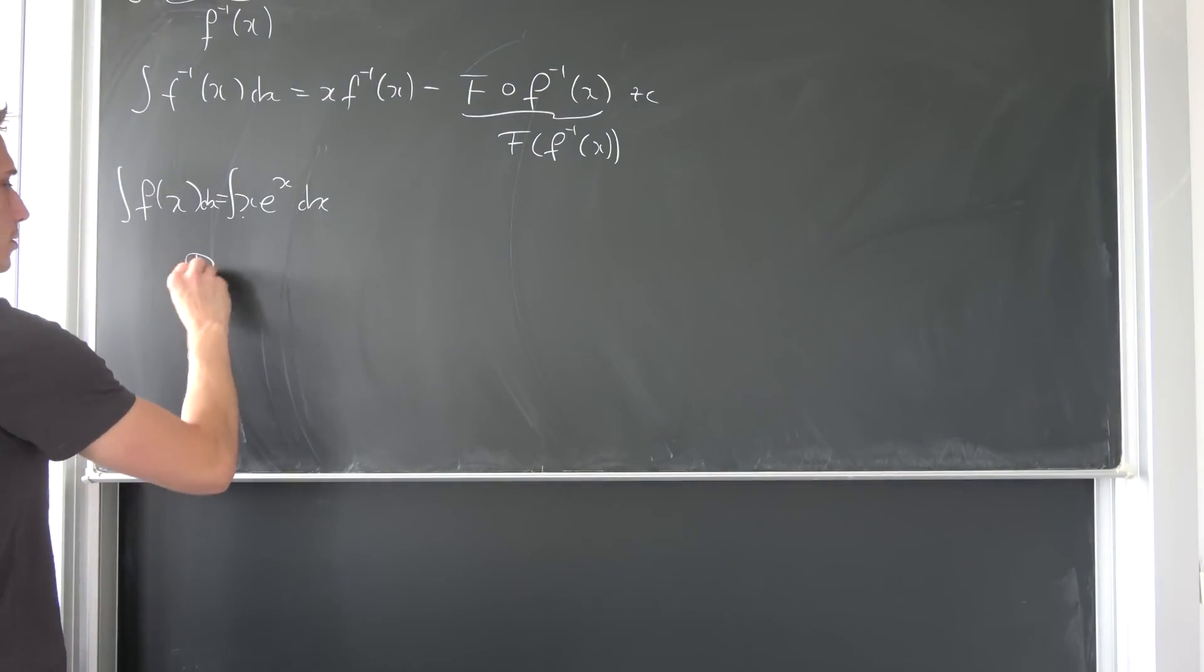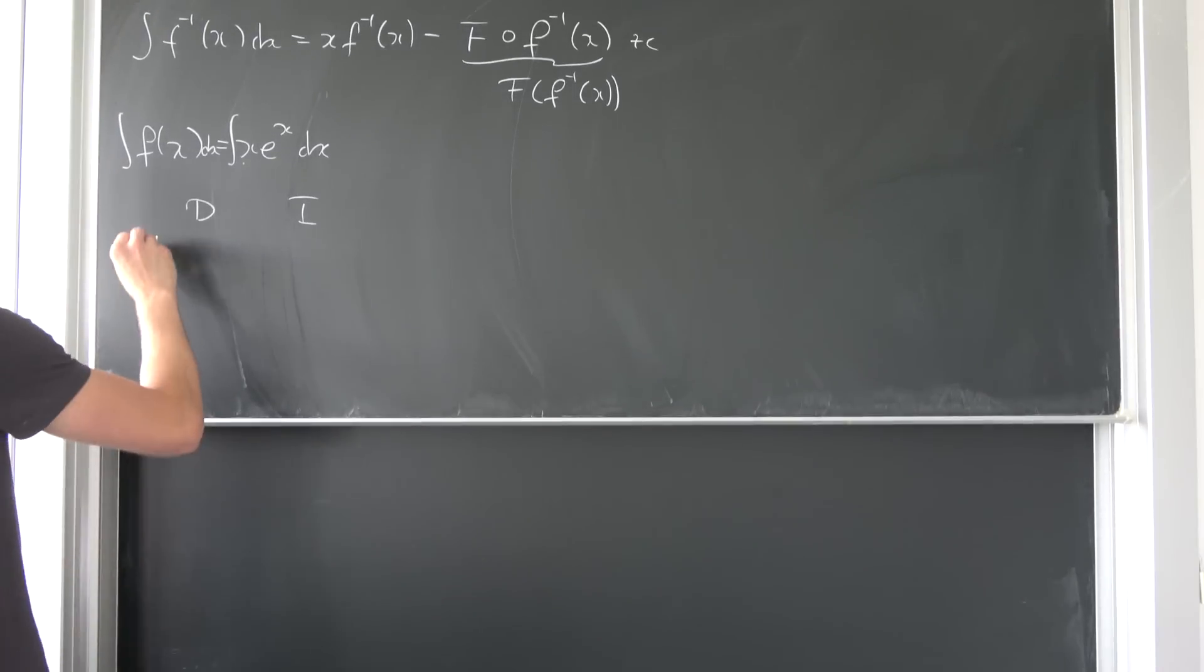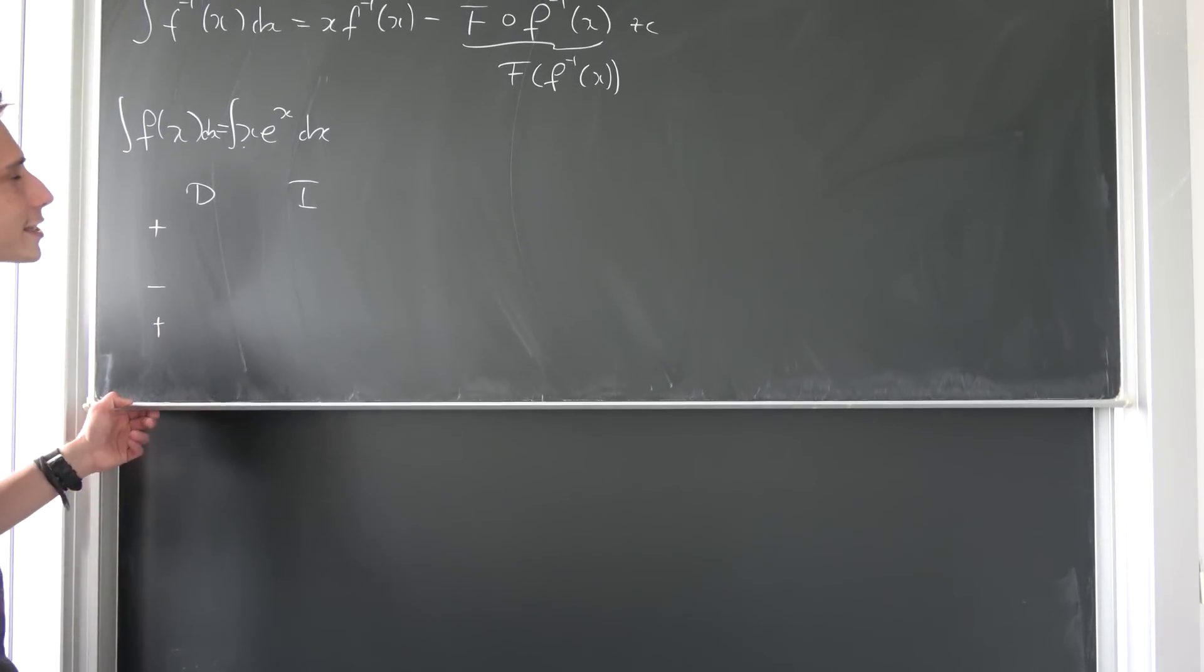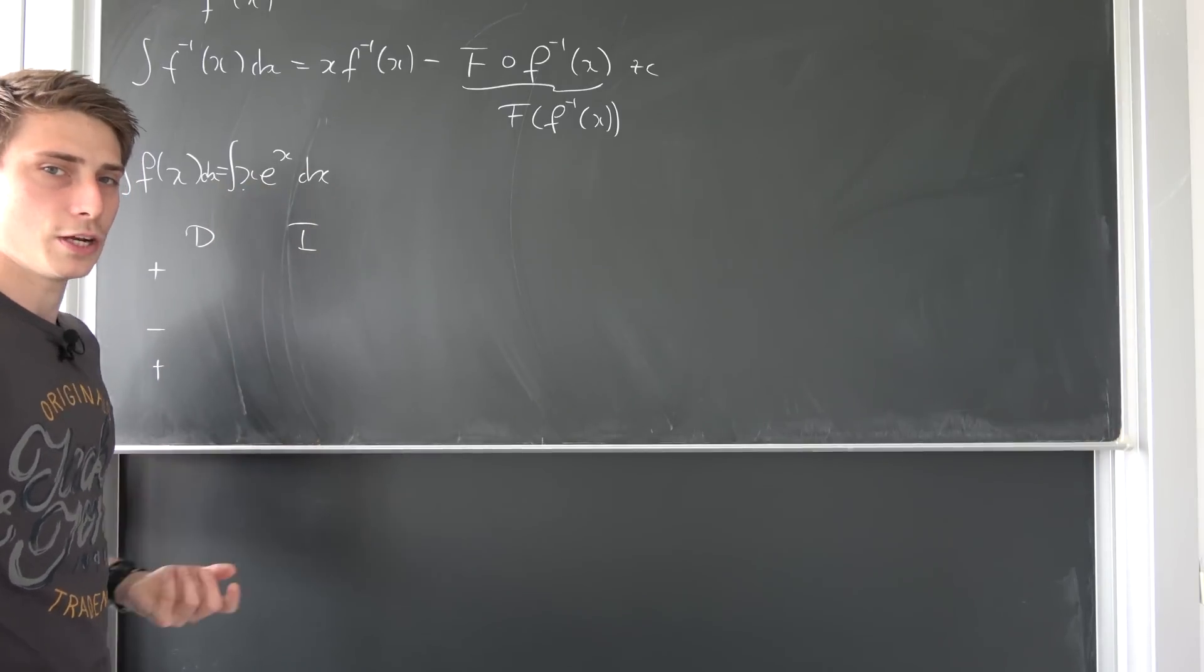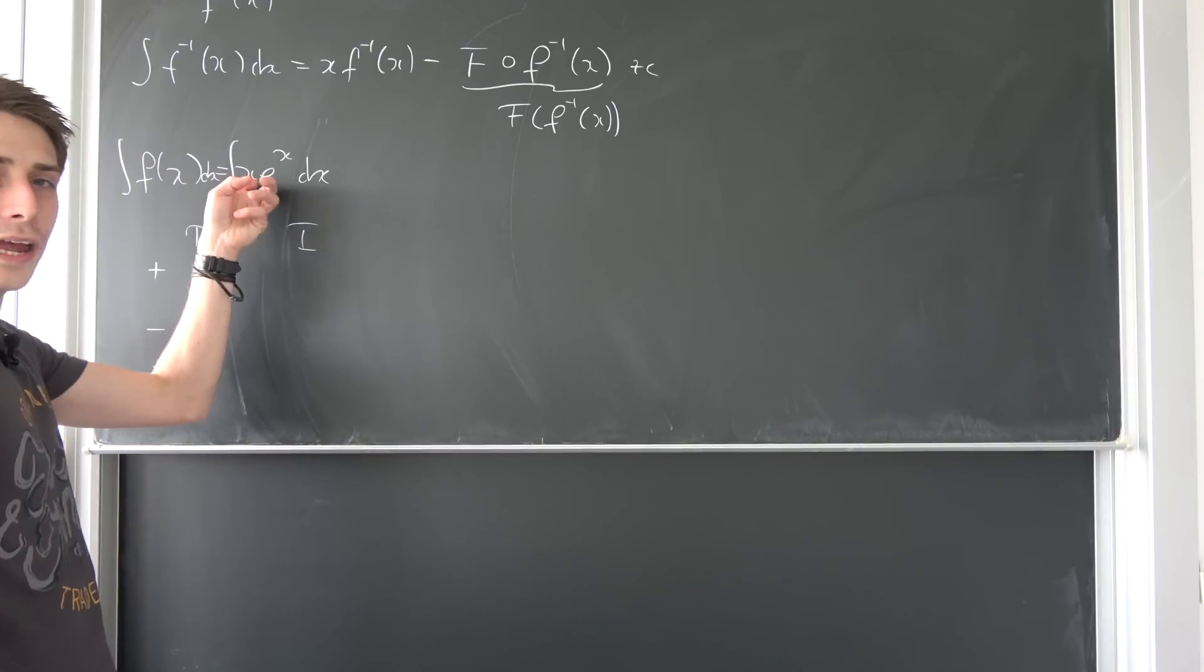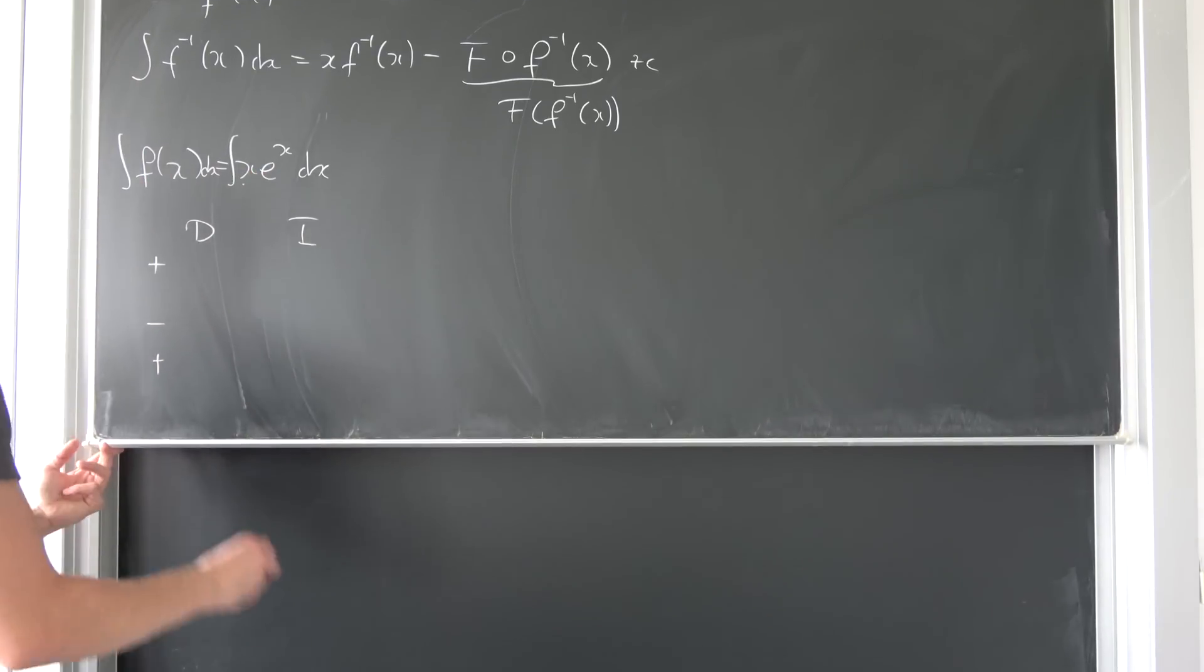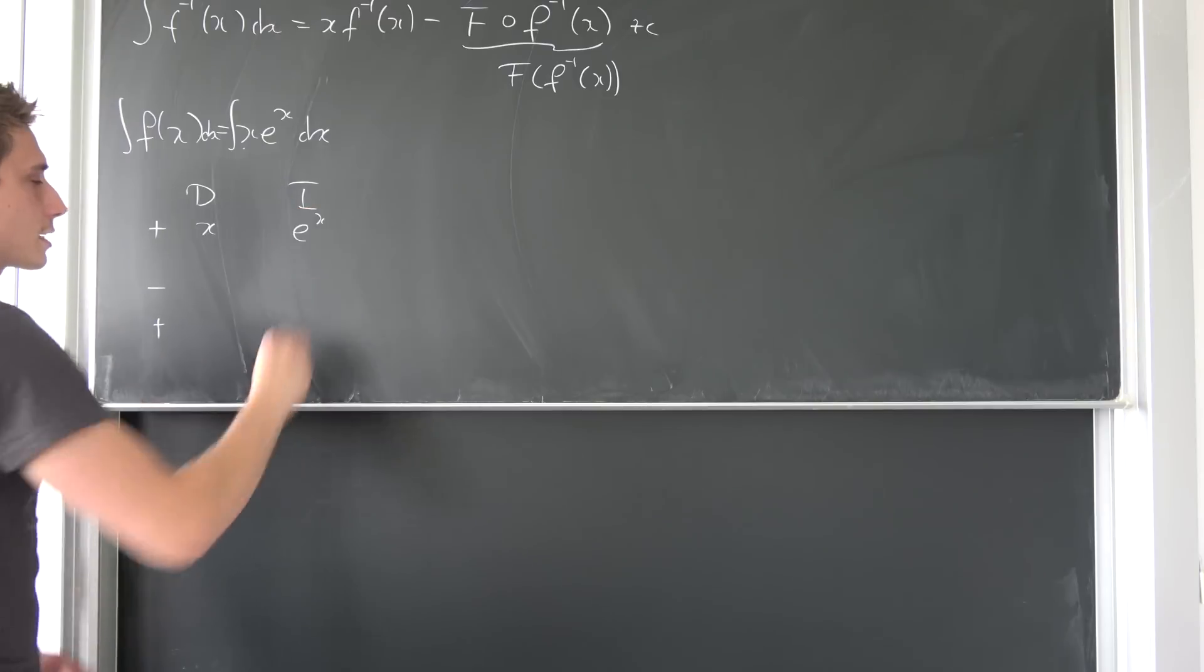Well, just use integration by parts. So something to differentiate, something to integrate, plus minus plus, don't forget your signs. Integrating e to the x would be better than differentiating it because x would go to zero way faster than e to the x. So let's differentiate x and let's integrate e to the x.